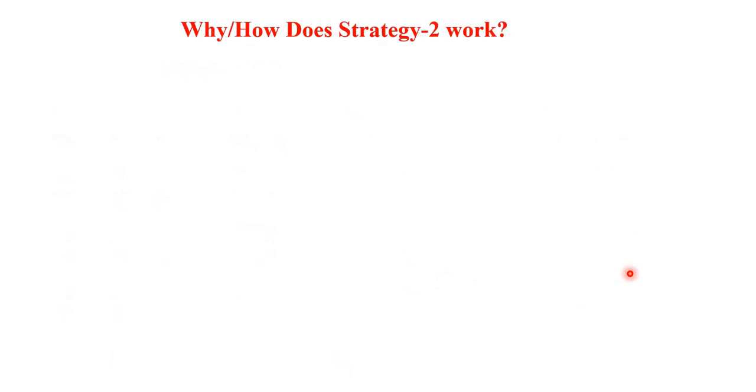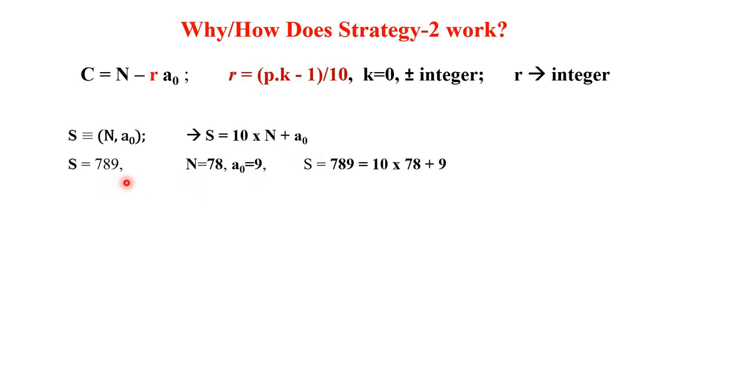Now, why or how does strategy 2 work? This is very important. So C is N minus ra₀ and we have prescribed r equal to p k minus 1 divided by 10. So S after truncating the number, you can write in a fashion that N and a₀, and in decimal number system, we can say that this is the digit at the unit place and this N value is a number at the 10th place. So S is 10 into N plus a₀, that you can write. For example, for 789, N is 78 and a₀ is 9. So S is simply 10 into 78 plus 9. So S is 10N plus a₀. Now what we will do? S minus a₀, if you bring a₀ from right to left, you get 10N.